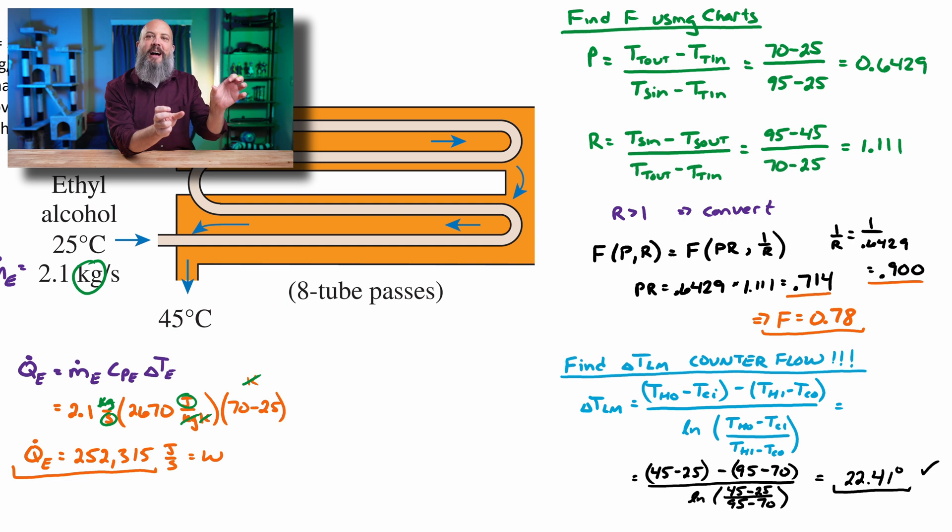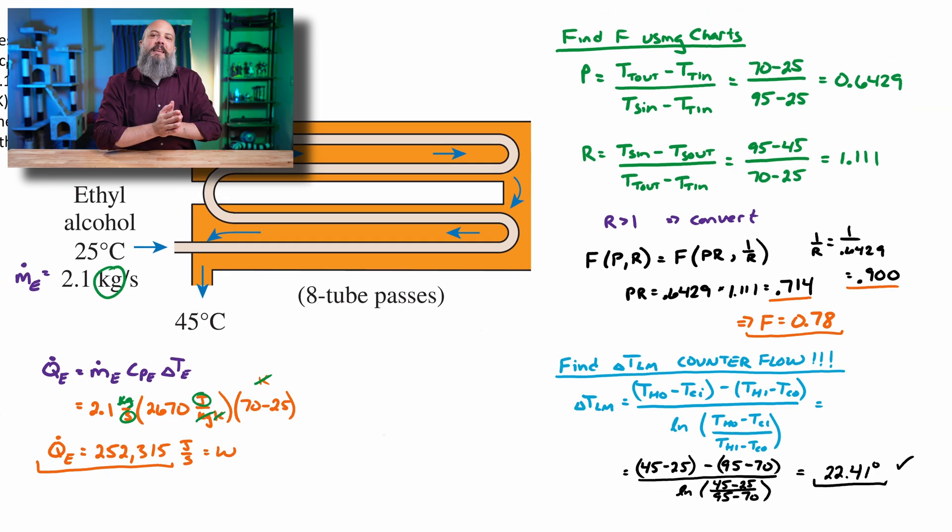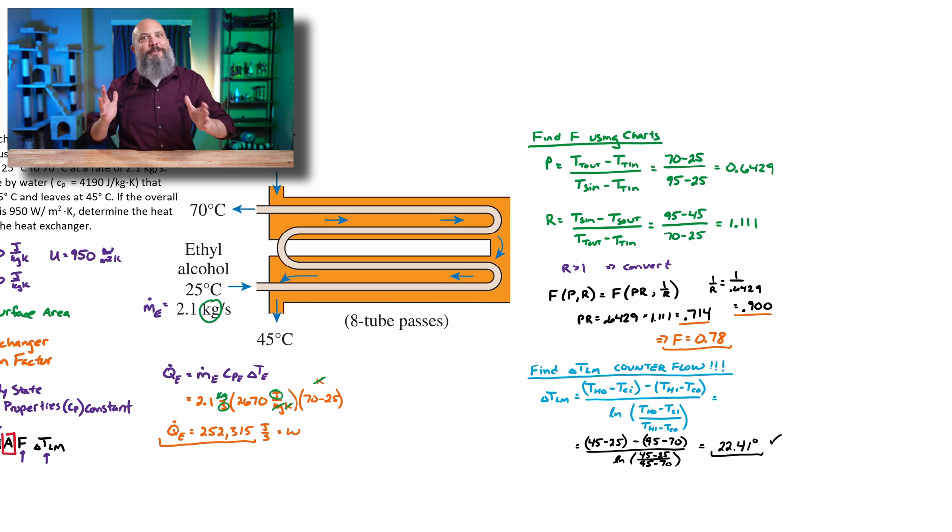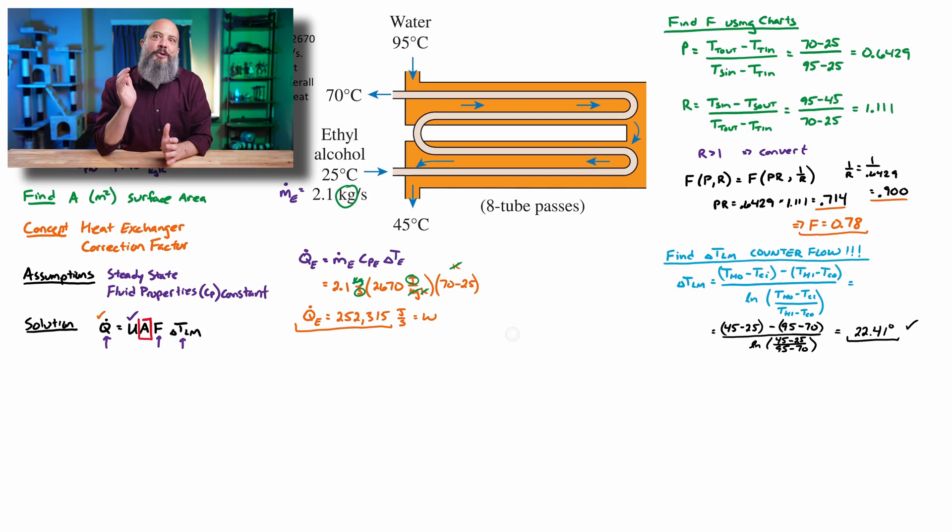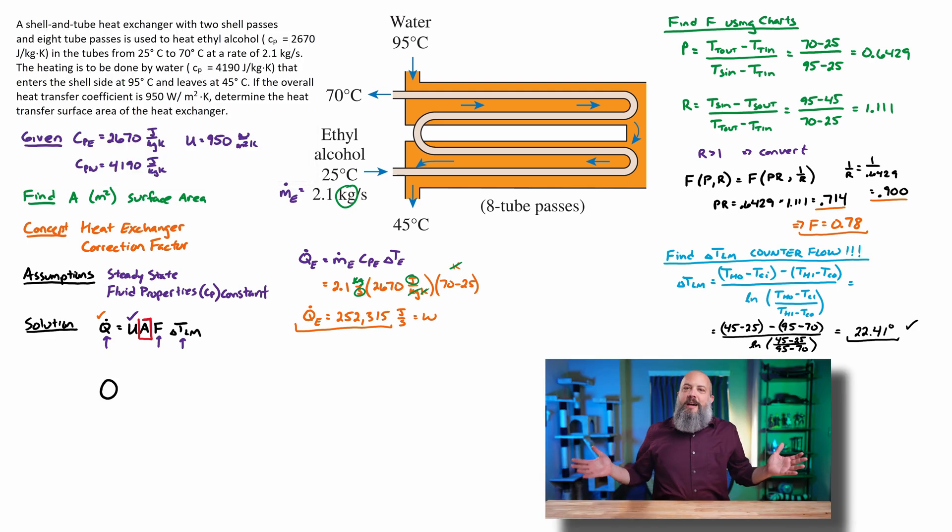That's 45 minus 25 and 95 minus 70. So 20 and 25 should be in between those two kind of close to the middle. And 22.4 is very close to 22.5. So this value does make sense. If we got a value that was a lot different, check your calculator or replug in all the numbers again, you might've fat fingered something on your calculator.